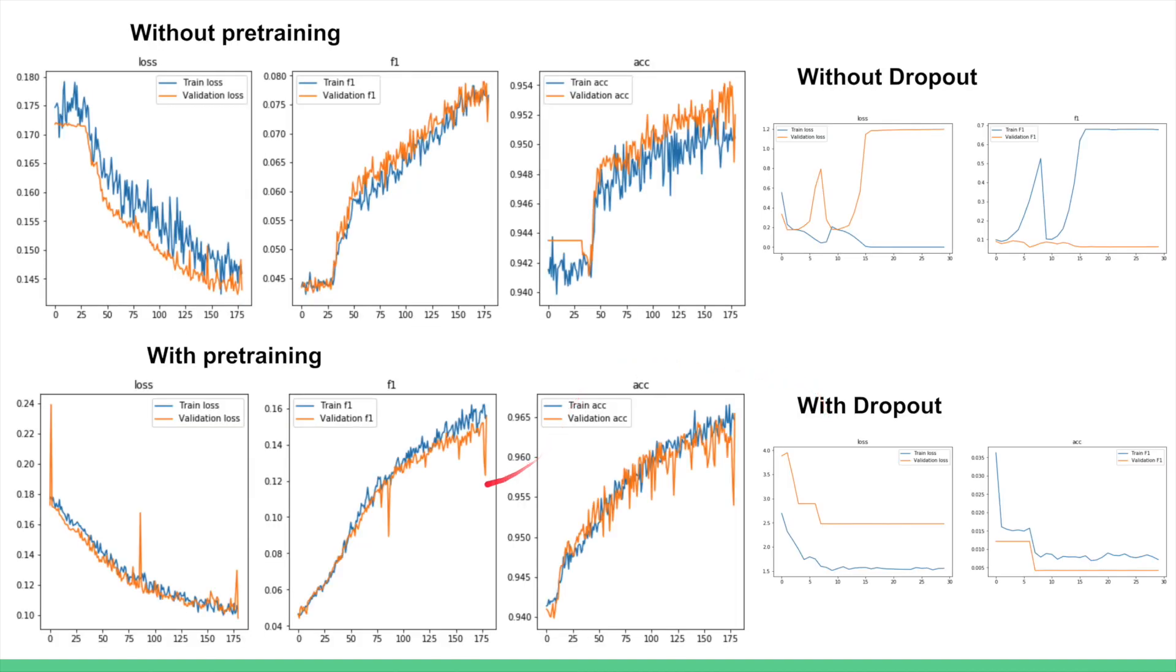On this slide, you can see the effect of pre-training. The pre-trained network reaches higher F1 scores more quickly. We can also see the effect of dropout. Without dropout, the network overfits, as we can see in this image, where the training accuracy increases while the validation accuracy decreases.